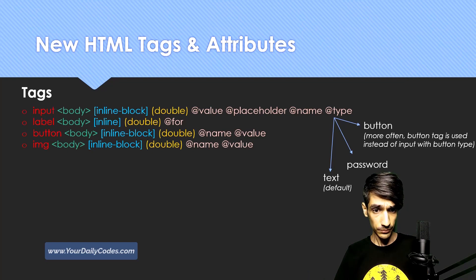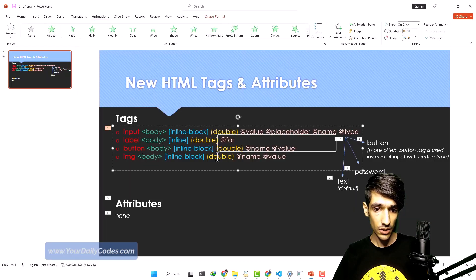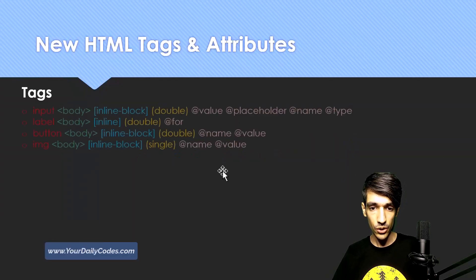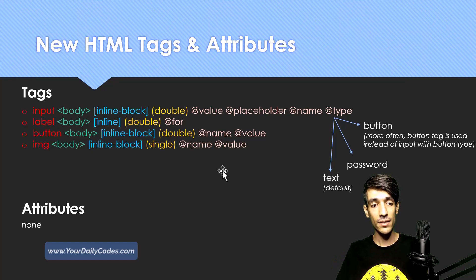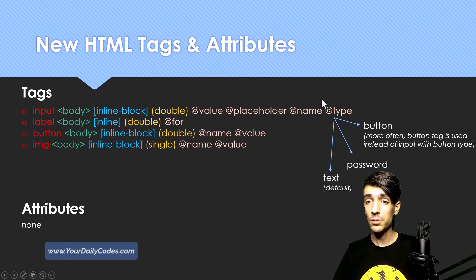Input type button is not commonly used because people rather use the button tag instead. We saw what label is — it is a double tag with a specific attribute, which is for, and we saw what this is. And the IMG tag is not double — this IMG is single. So this is all we learned. We had many new attributes, but the attributes were specific to tags — by general attributes I mean we had no new general attribute in this session. I hope to see you in the next session.